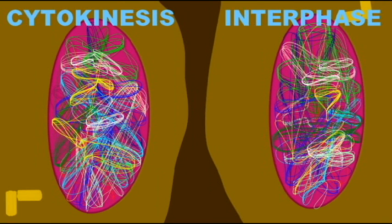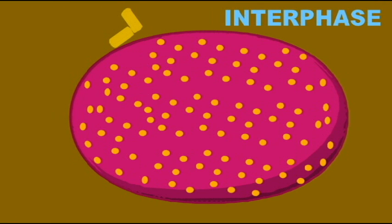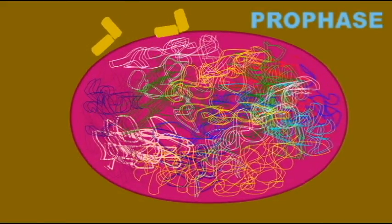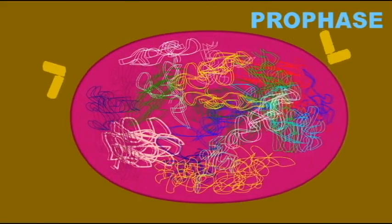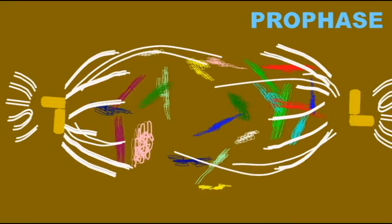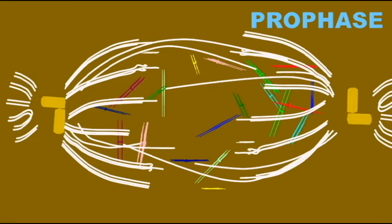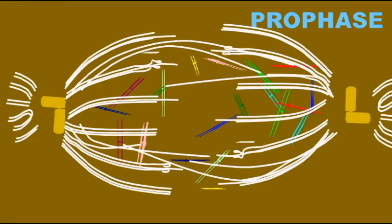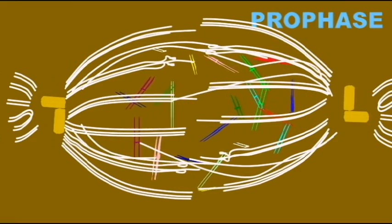And then the polar microtubules, which push away from each other and help to separate the chromosomes during anaphase and telophase. And so the spindle apparatus forms to help control the movements of the chromosomes during mitosis.